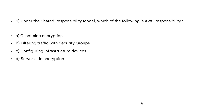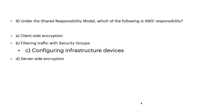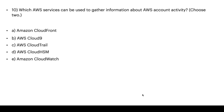Regarding the shared responsibility model, which of the following is AWS's responsibility? A: client-side encryption, B: filtering traffic with security groups, C: configuring infrastructure devices, or D: server-side encryption. The right answer is C: configuring infrastructure devices.